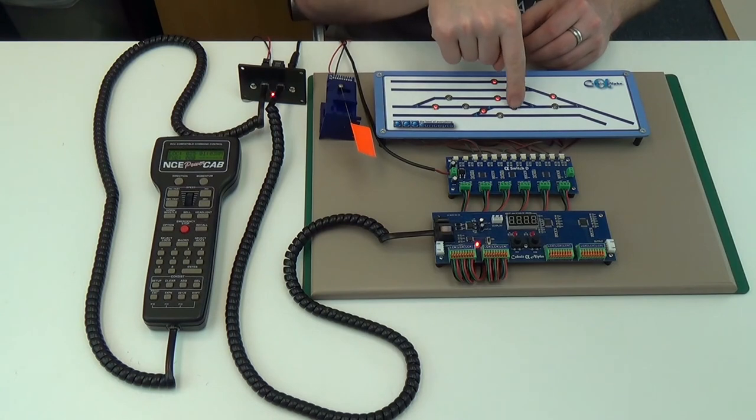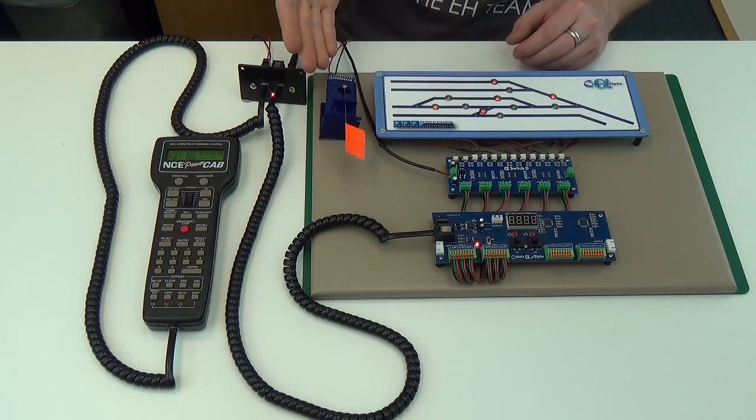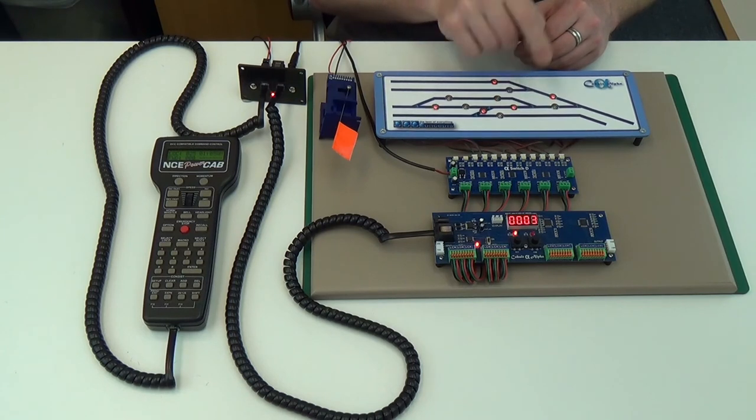Pressing the switches now operates the point motor. Repeat this for all the other point motors. Remember, the AEU has already allocated two, three, four, five, six, etc. Nothing else to do but select set so the Cobalt learns its address. Operate the next switch, select run, and that's it.